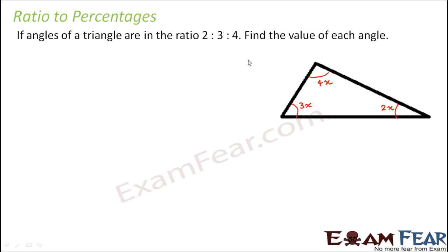Why did we consider x? Because we do not know what is the real value of the angle. The value could be anything, the real value could be 20 degree, it could be 40 degree, it could be 100 degree, it could be anything. So we just assume that let there be a variable x such that if this value is 2x, this would be 3x and this would be 4x because in that case the ratio will be 2 is to 3 is to 4.